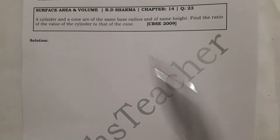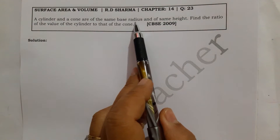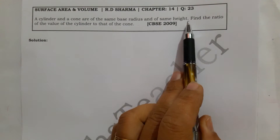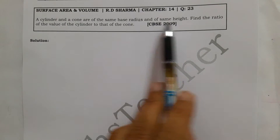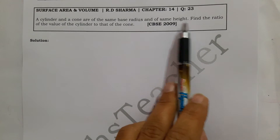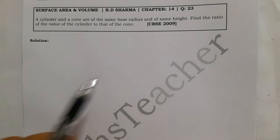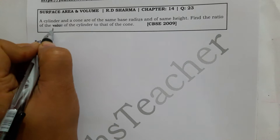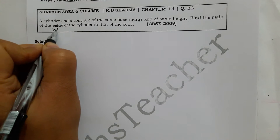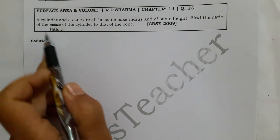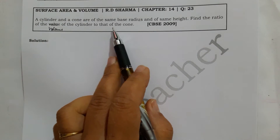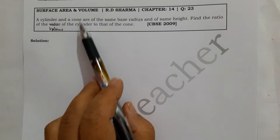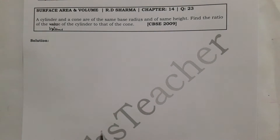A cylinder and a cone are of the same base radius and of the same height. Find the ratio of the volume of the cylinder to that of the cone. We need to find the ratio of the volume of the cylinder to the volume of the cone.